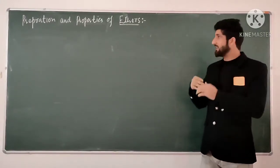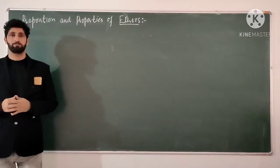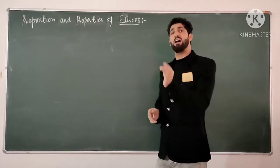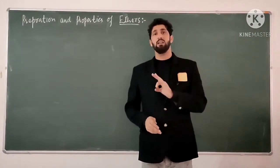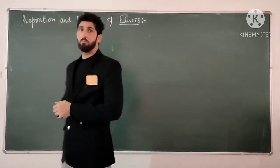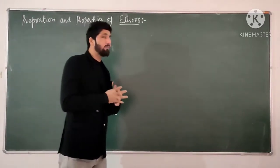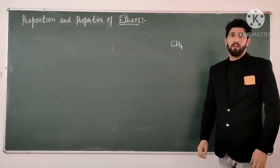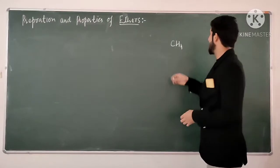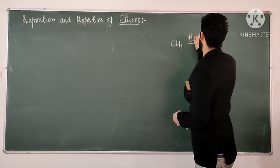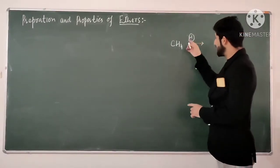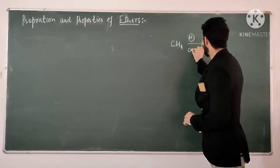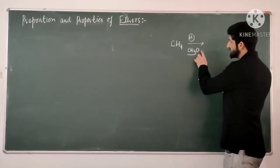Ethers — which compounds are they? When you are in an aliphatic or aromatic hydrocarbon and we remove a hydrogen, and we substitute it with an alkoxy group — that means alkyl group plus oxygen atom — this is called an alkoxy group.